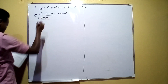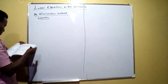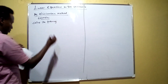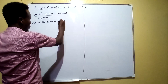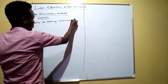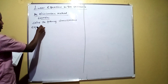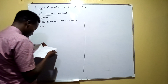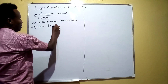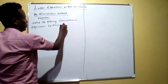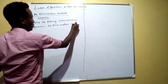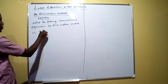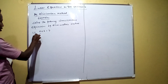Example one — solve the following simultaneous equations by elimination method. The first equation is: a plus b is equal to 7. The second equation is: a minus b is equal to 5.